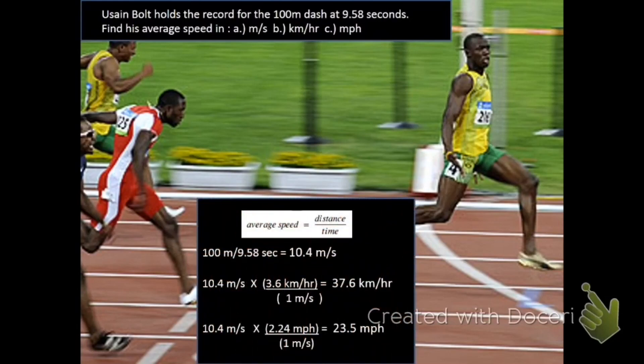So to figure his average speed, we're going to take his total distance, which he ran 100 meters, and divide it by the time that it took him to run it. That'll give us his speed in meters per second. From there, we can do two conversions. And I chose to do three significant digits.